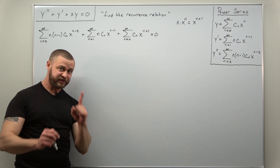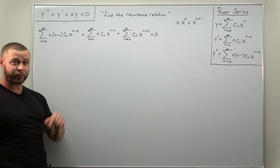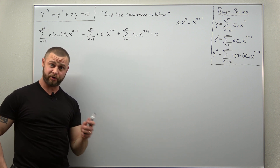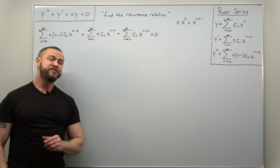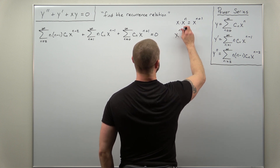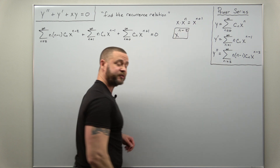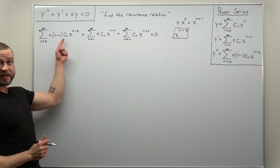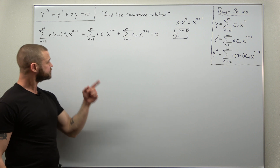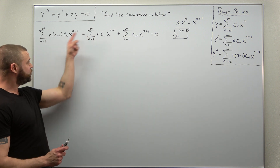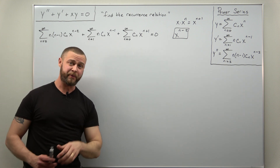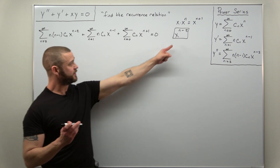From here, we're going to try to condense all three power series into a single one. We have three of them and all have different powers of x. To do this in the simplest way with the least amount of work, let's shift all the powers of x to x to the n minus two. That way we can keep the first one the same and just shift two of them.